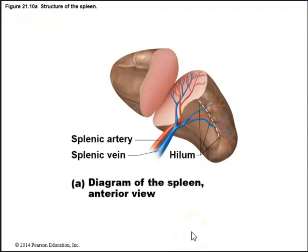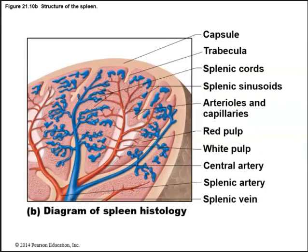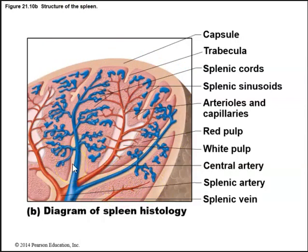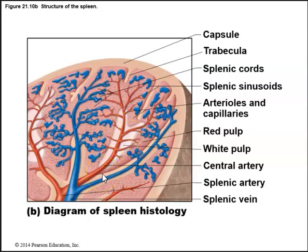Here we see a diagram of the spleen. The spleen contains a hilum where the splenic artery and splenic vein enter and exit. A closer view shows the outer capsule, outer cortex, and inner medulla. We can see splenic cords, splenic sinusoids, and areas of white pulp surrounded by red pulp, along with the blood supply from the splenic artery and splenic vein.